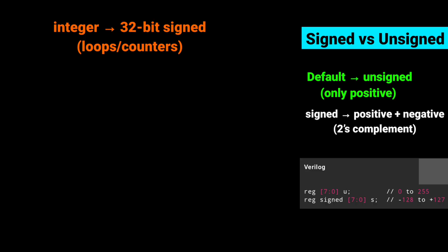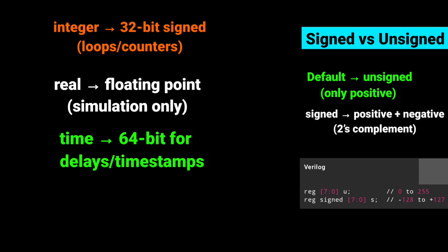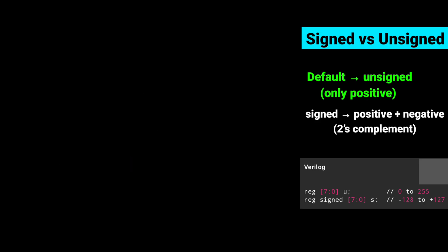And other types are Integer, which is basically 32-bit signed, useful for loops and counters in test benches. Next is Real, which is basically floating point, used in simulation only. And next is Time, which is 64-bit and is used for delays and timestamps.